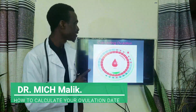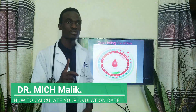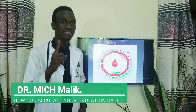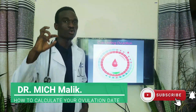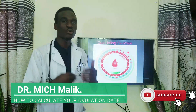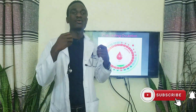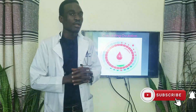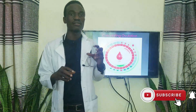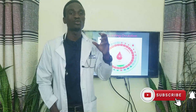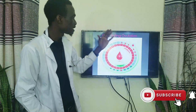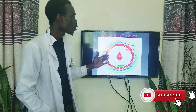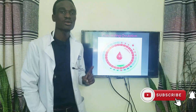Calculating the ovulation date is specifically for a regular cycle — whether it is a 28-day, 26-day, or 30-day cycle that is regular and consistent. I have made a video about irregular periods where someone's cycle is not consistent, but specifically for this video, we are looking at a regular 28-, 26-, or 30-day cycle that is consistent.